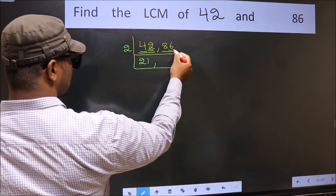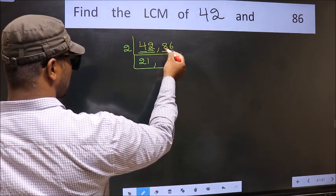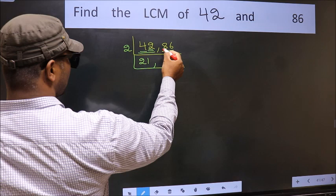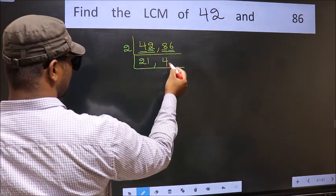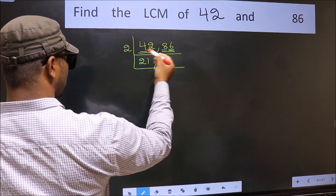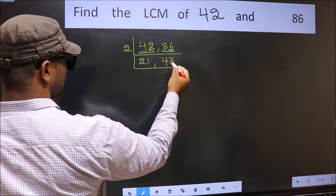Now the other number 86, last digit 6, even, so this is divisible by 2. First number 8, when do we get 8 in 2 table? 2 fours, 8. The other number 6, when do we get 6 in 2 table? 2 threes, 6.